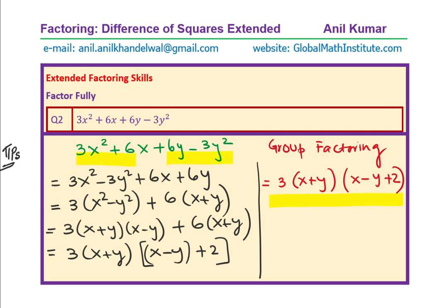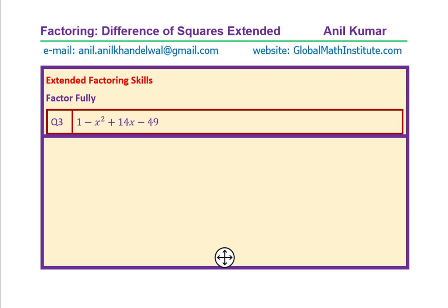Now, based on these strategies, you should be in a position to factor the rest of the equations. Here, we have 1 - x² + 14x - 49. How should I do this? So, we are given 1 - x² + 14x - 49. How should I factor this? Well, we see that 14 is 2 times 7. We know 14 is 2 times 7 and that gives us an idea.